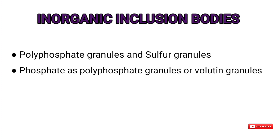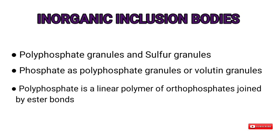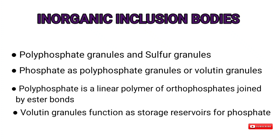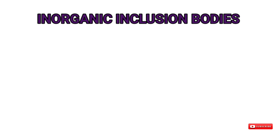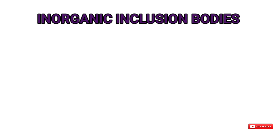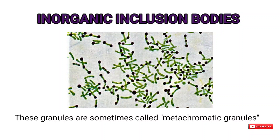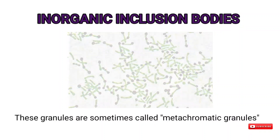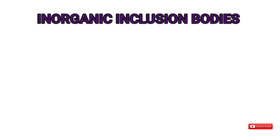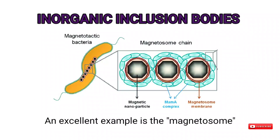Two major types of inorganic inclusion bodies are seen in prokaryotes: polyphosphate granules and sulfur granules. Many bacteria store phosphate as polyphosphate granules or volutin granules. Polyphosphate is a linear polymer of orthophosphates joined by ester bonds; volutin granules function as storage reservoirs for phosphate, important for nucleic acids. In some cells they act as an energy reserve. These granules are sometimes called metachromatic granules because they show the metachromatic effect. An excellent example of inclusion bodies used for purposes other than storage is the magnetosome, used by some bacteria to orient in Earth's magnetic field — many contain iron in the form of magnetite.